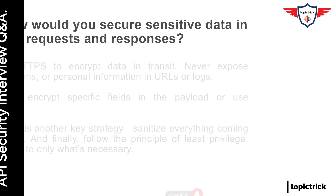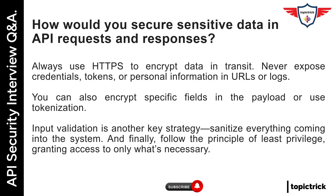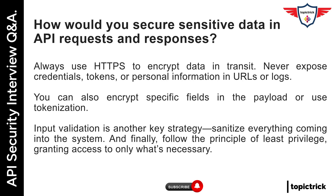How would you secure sensitive data in API requests and responses? Always use HTTPS to encrypt data in transit. Never expose credentials, tokens, or personal information in URLs or logs. You can also encrypt specific fields in the payload or use tokenization. Input validation is another key strategy — sanitize everything coming into the system. And finally, follow the principle of least privilege, granting access to only what's necessary.